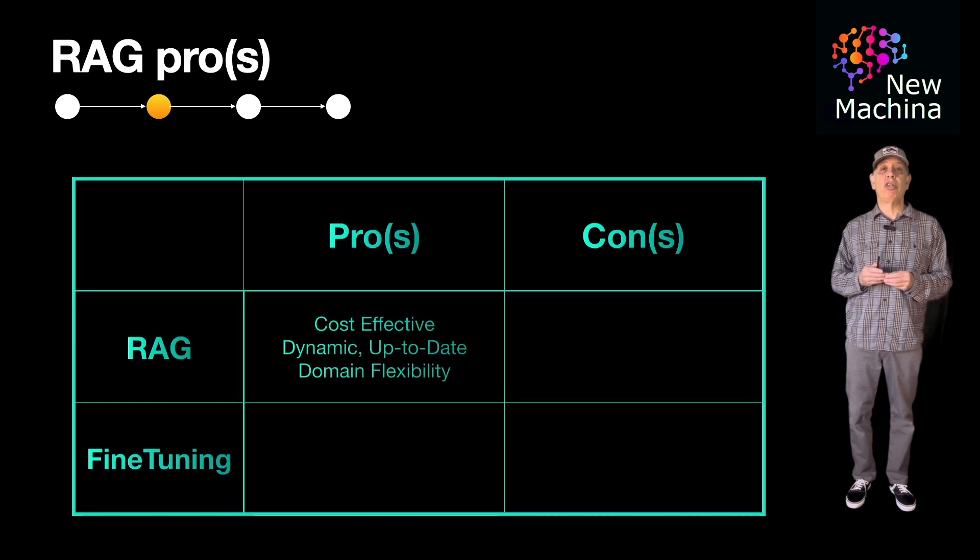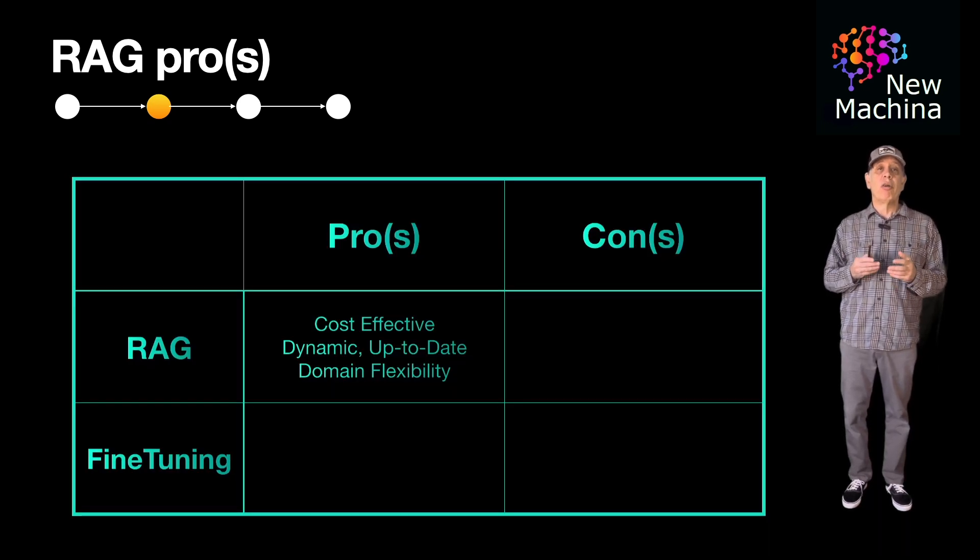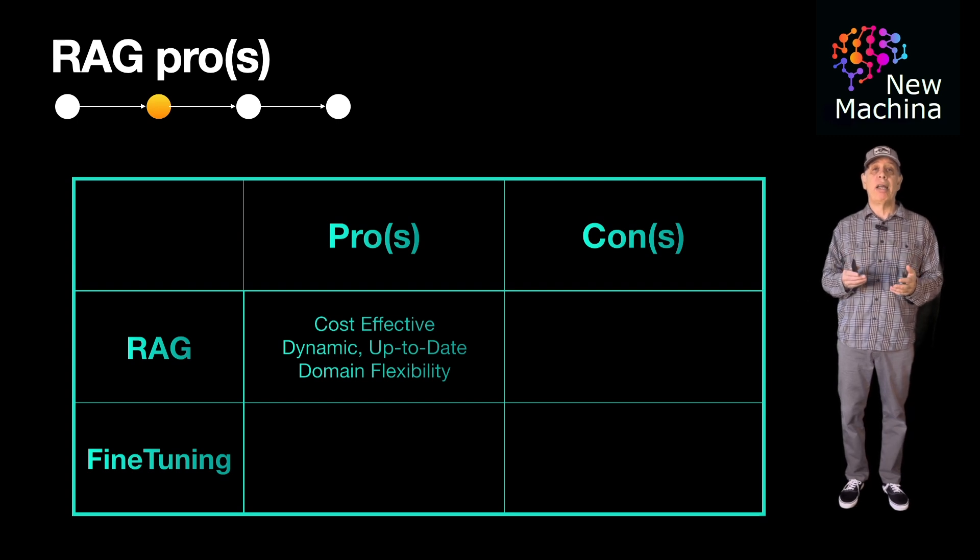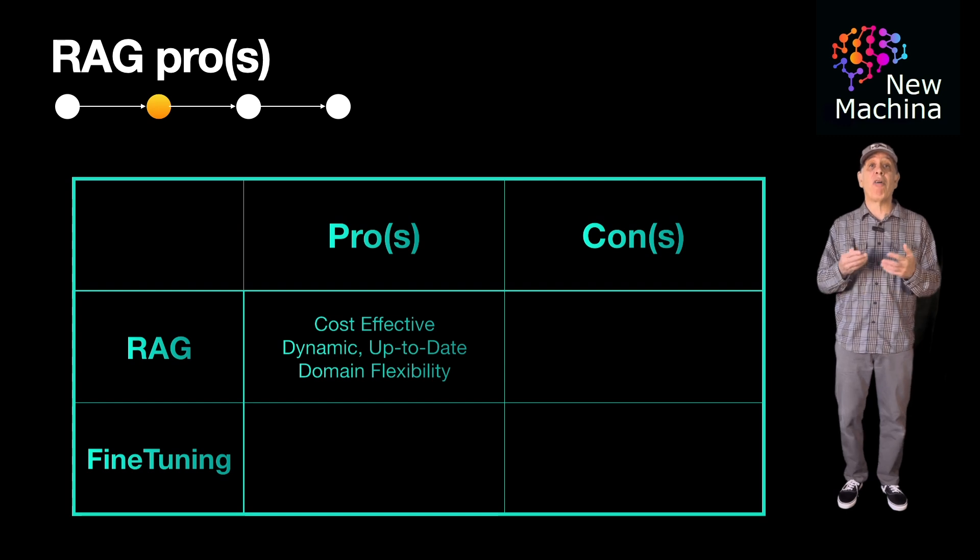Okay, so what are the pros for using RAG? Well, the first is cost-effectiveness. There is no need for the LLM to be modified, so this approach avoids the computational and financial costs of fine-tuning.